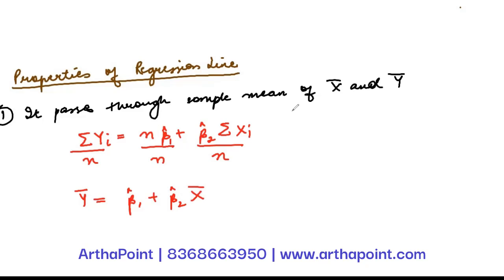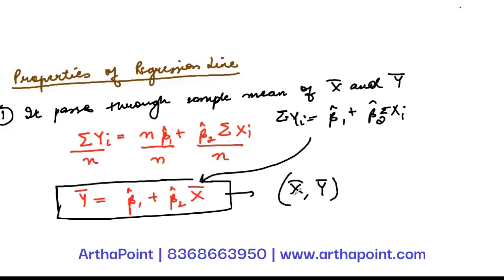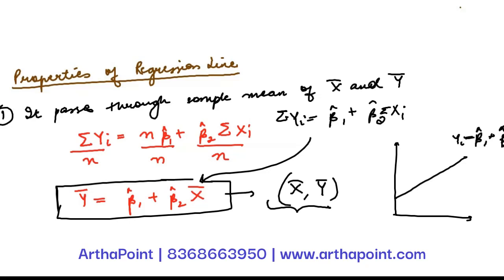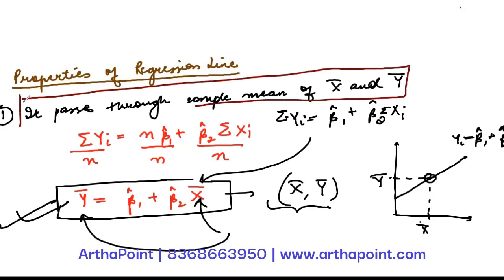This means that I started with an equation ŷi equals β₁̂ plus β₂̂·xi in its normal form, and I came to an equation that has the coordinates (x̄, ȳ). So if I have any regression equation of the form ŷi equals β₁̂ plus β₂̂·xi, when I put x̄ into the equation, I get ȳ. One of the coordinates is (x̄, ȳ), and because this coordinate satisfies this equation, my regression line passes through the sample means. This is my first property of the regression line.